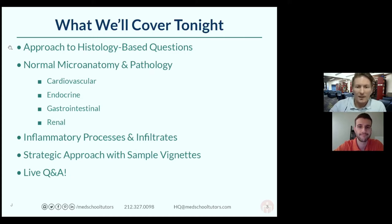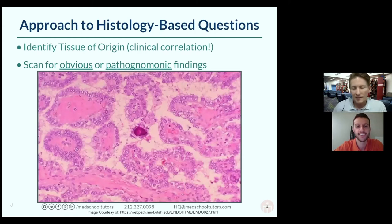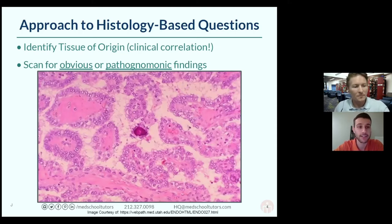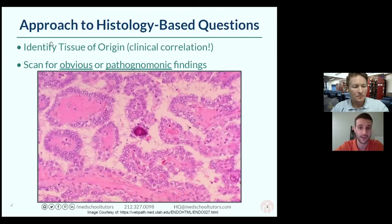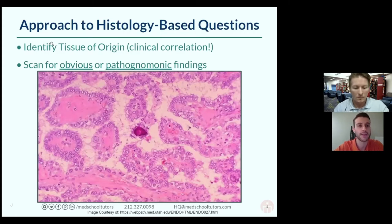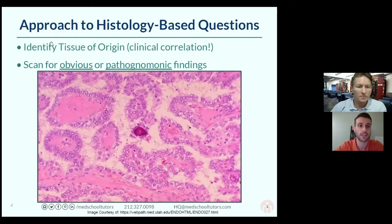When you click to the next question and see a path slide, it can be a little intimidating. Our goal is that by the end of tonight you won't feel that way. The most important thing to take away is to see it as a buzzword in disguise. First Aid gives you descriptions of pathognomonic findings — a histology image is almost in lieu of that. They show you a picture and it's up to you to translate the image into the buzzword.